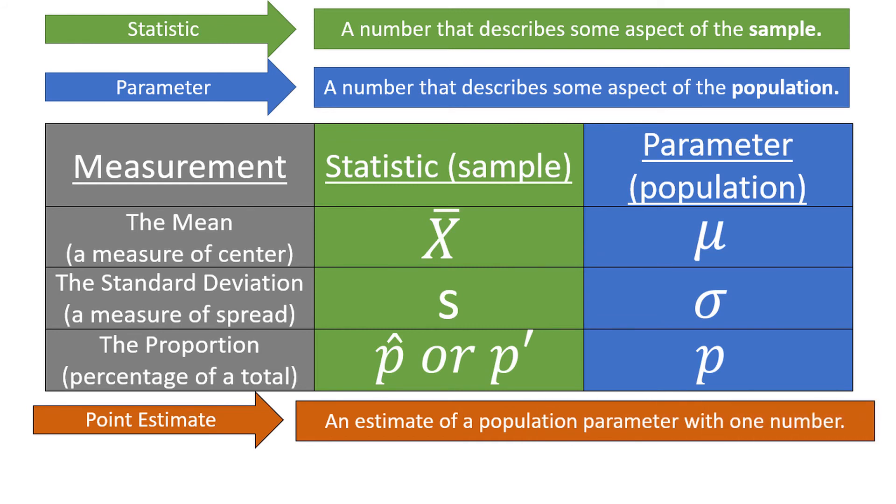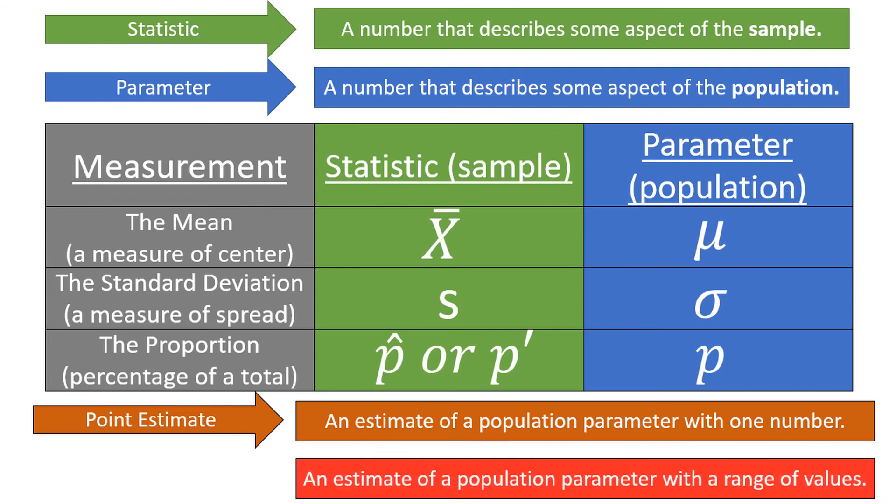As samples rarely if ever perfectly represent the population, it's better not to rely on a point estimate, but instead a range of values to help us estimate the population parameter. This is what we call a confidence interval.